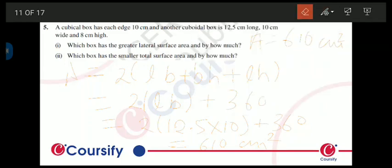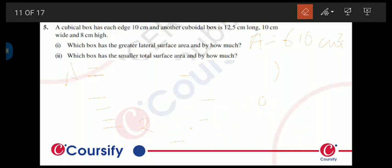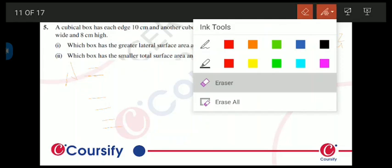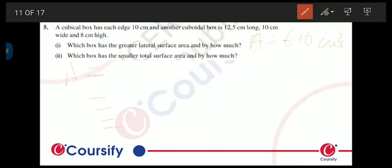For cubical we can simply use 6a squared formula, so six times 10 raised to the power 2. So this will be 600 centimeters square.